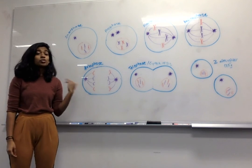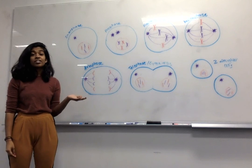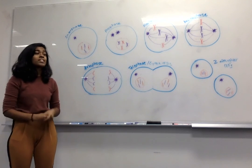After cytokinesis, you're left with two genetically identical diploid daughter cells, each with a full set of chromosomes and cellular organelles, and mitosis is complete.